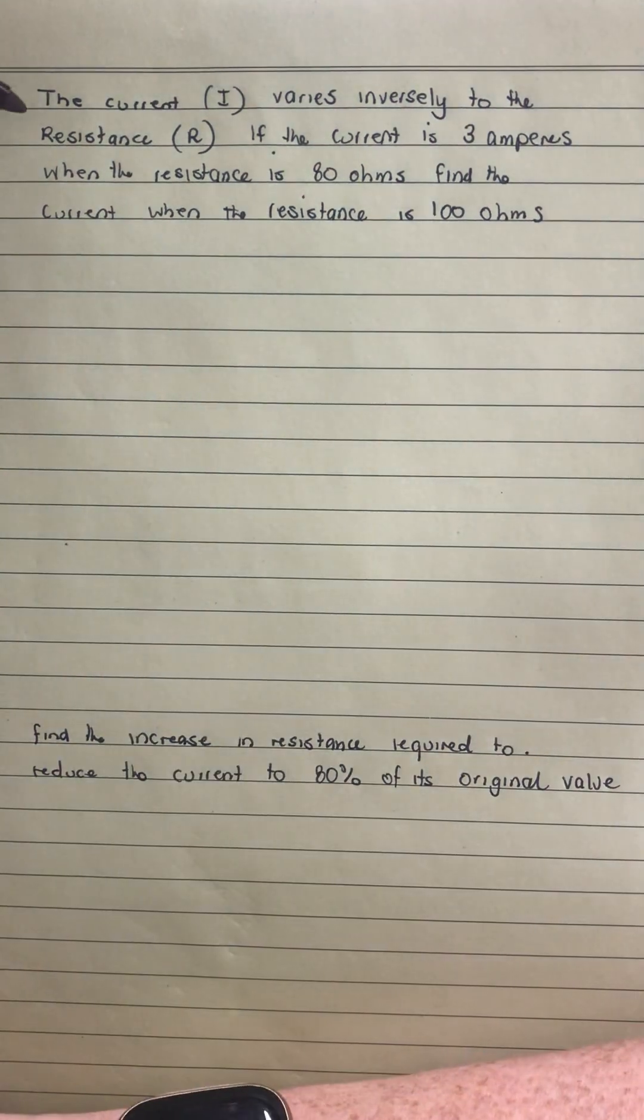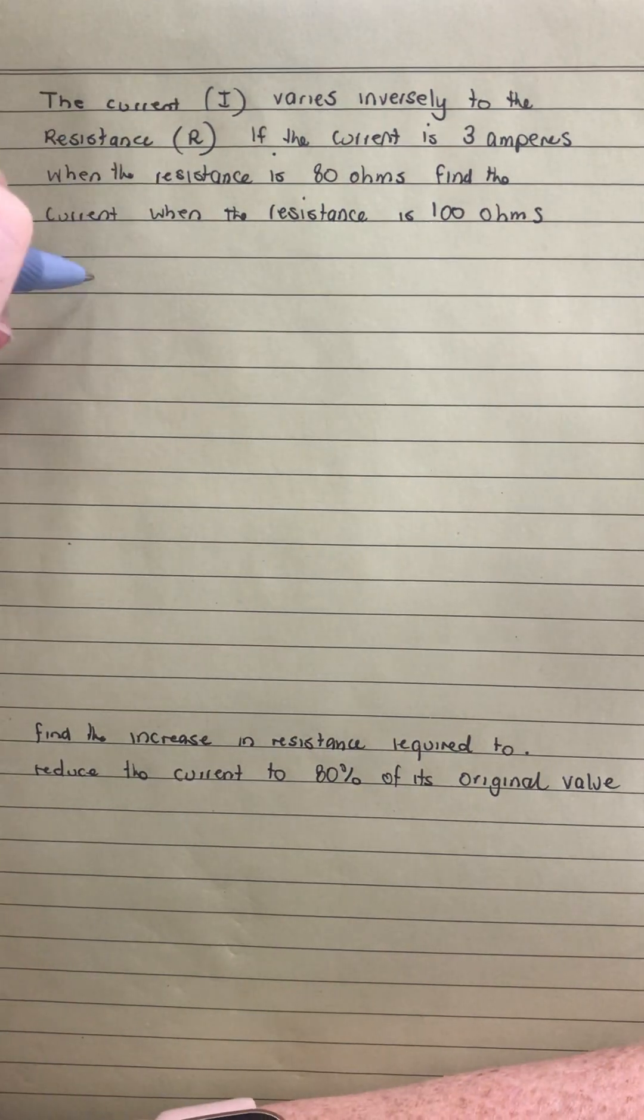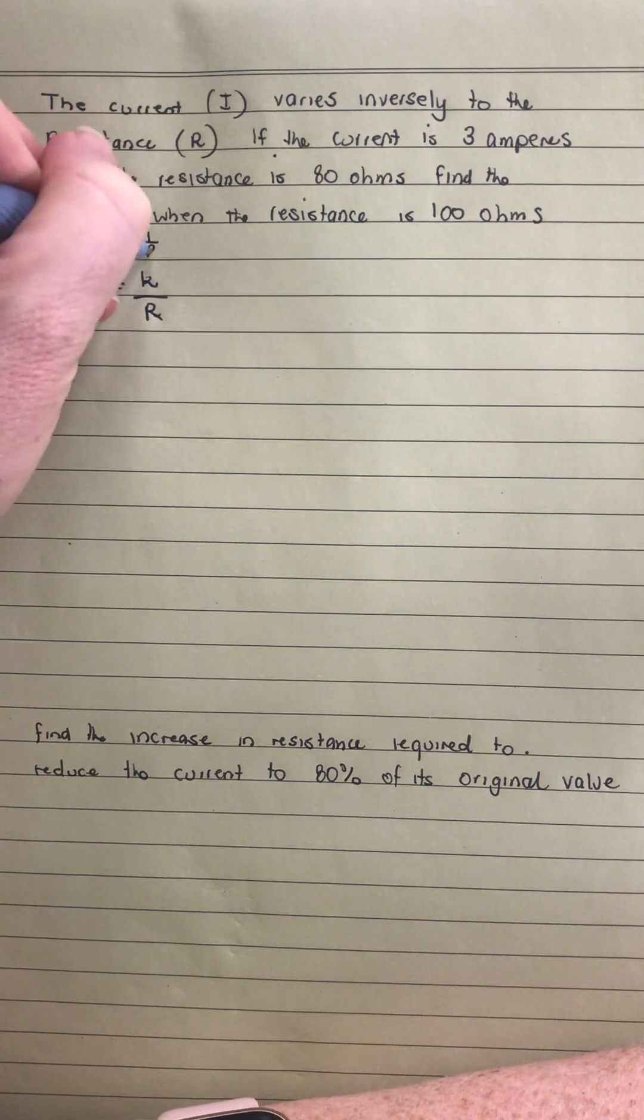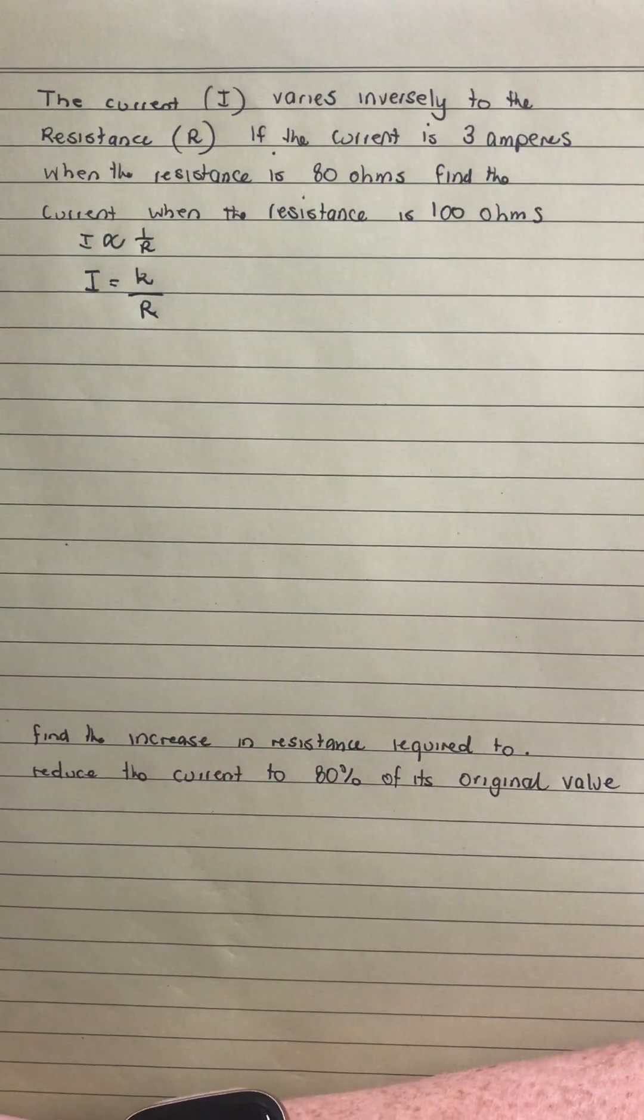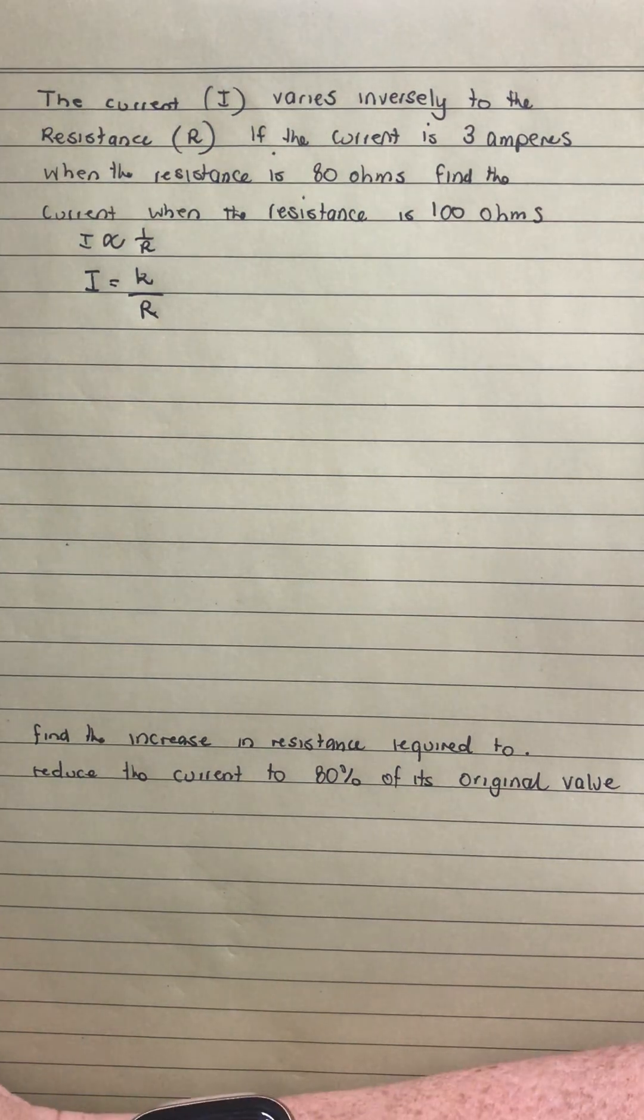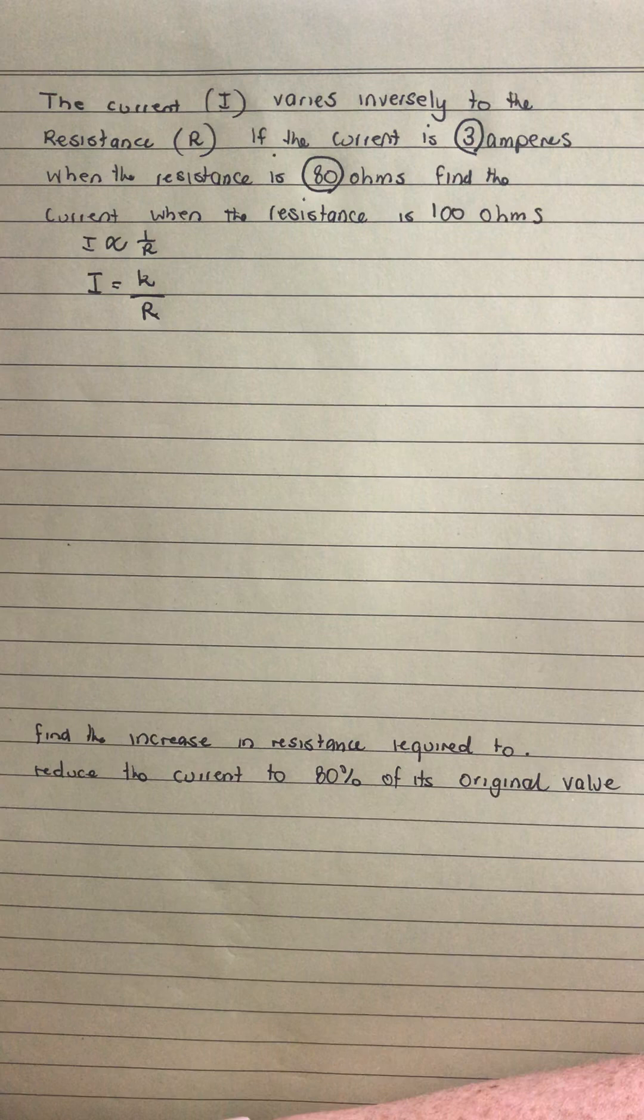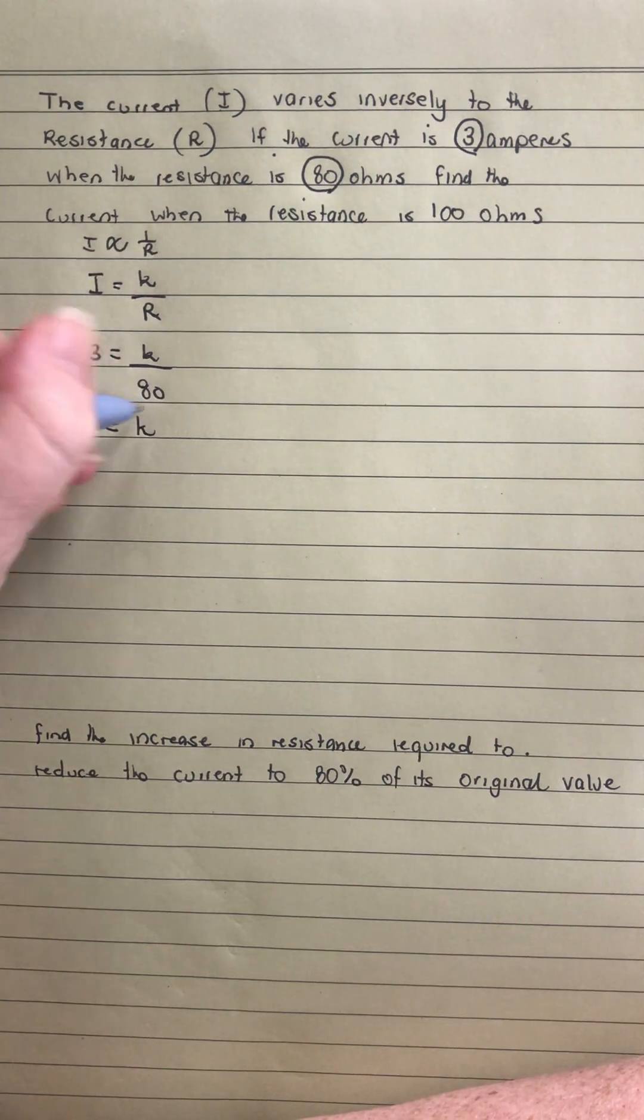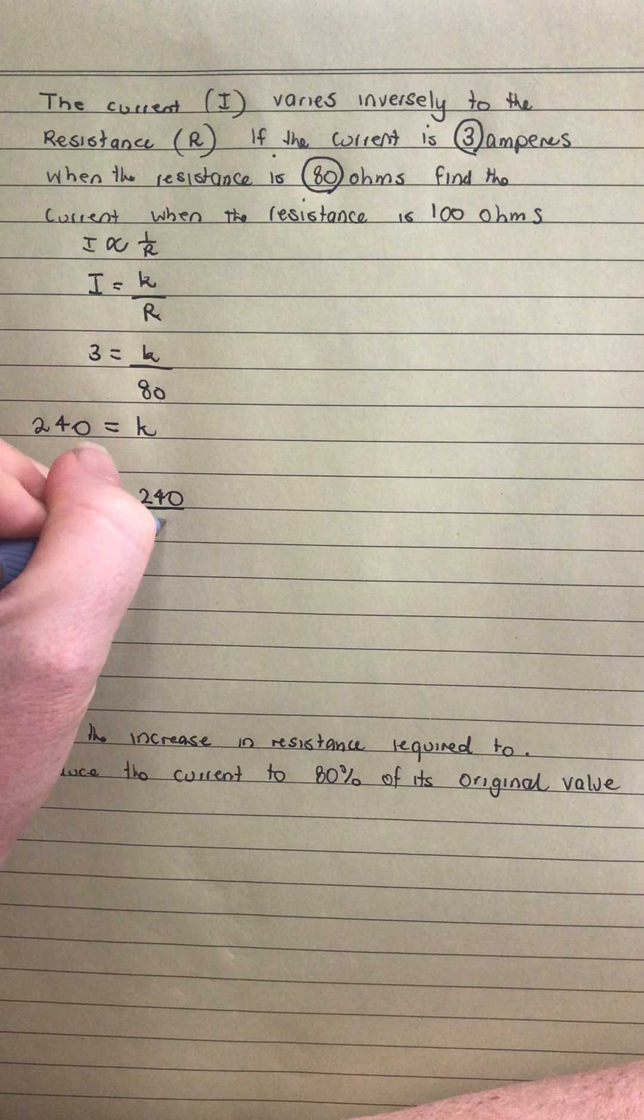Now, the last one that I wanted to look at is one of the worded ones. We've got the current i varies inversely to the resistance r. I can write that as i is equal to k over r. I could have written the other one first, proportional to 1 over r, but I went straight to my k over r. If the current is 3 amperes when the resistance is 80 ohms, find the current. Students will often see that and go, oh, I don't know about amperes, I don't know about ohms. We don't need to worry about that. We know that the current is 3, and the resistance is 80. Where we see our current, because we've been told the current is the i, we're going to put a 3, and our resistance is 80. To get the k value, I'm going to times my 3 by 80, which is 240. And so I can then write that my current is equal to 240 over the resistance.